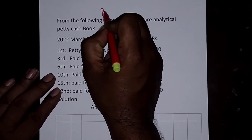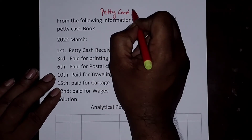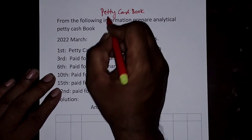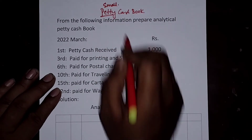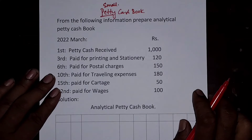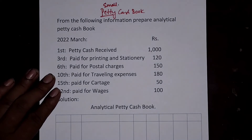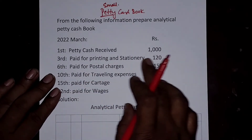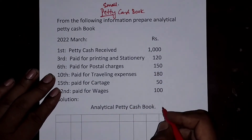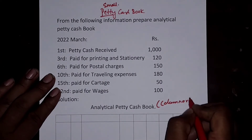This problem is about the Analytical Petty Cash Book. Petty means small — a small cash book. In an organization, small expenses that are not recorded in the main cash book are recorded in the petty cash book. These expenses are recorded in the analytical petty cash book, which is also called the columnar petty cash book, to show how much is spent on different expenses during a period.